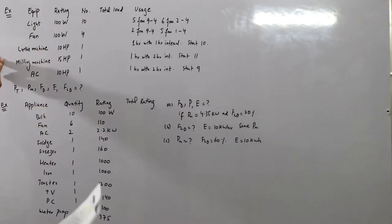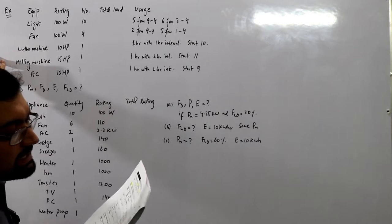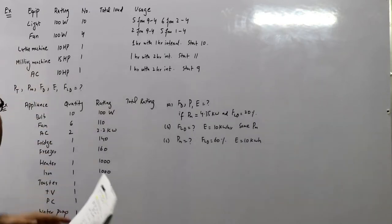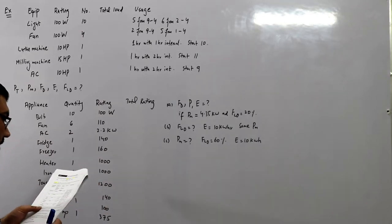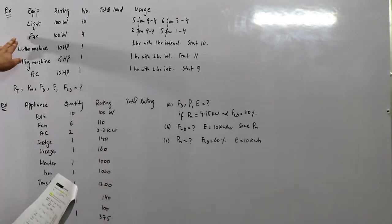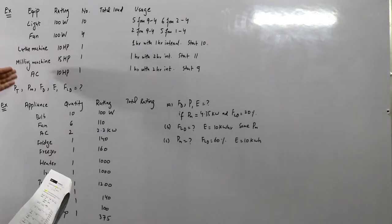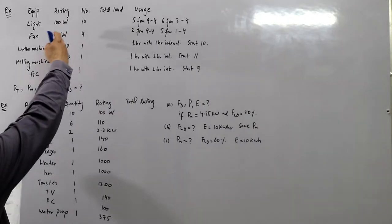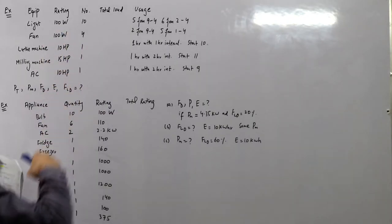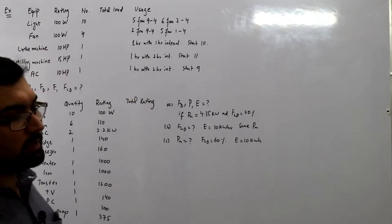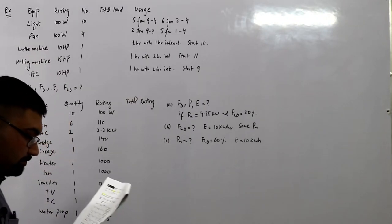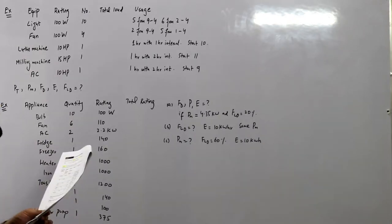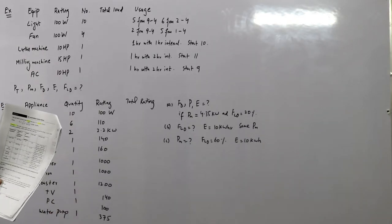The table shows the connected load and its average use for a small mechanical workshop which operates from 9 to 4. The equipment given includes a light, fan, lathe machine, milling machine, and an air conditioner. The ratings are given: 100 watts, 100 watts, 10 horsepower, 15 horsepower, 10 horsepower. The number of appliances are 10, 4, 1, 1, 1.